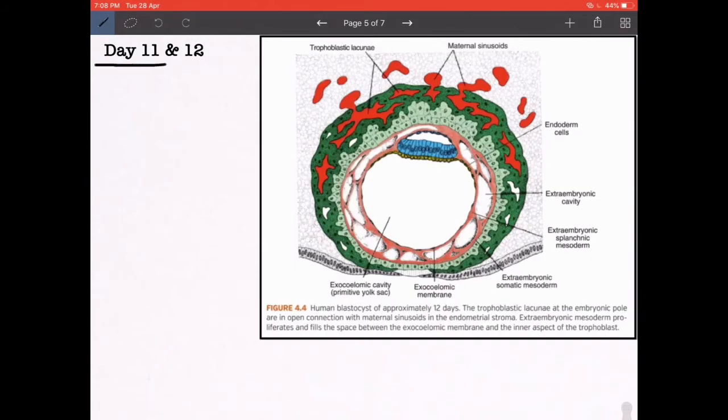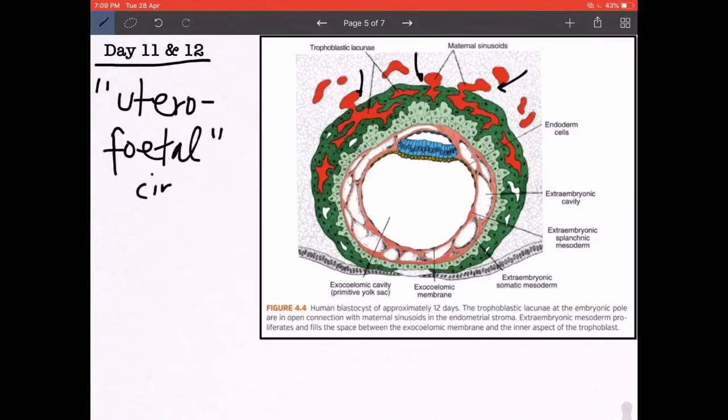Firstly, the endometrial sinusoids just made contact with the syncytotrophoblastic lacunae, and thus we have the first introduction of what is known as utero-fetal circulation. You can also call this utero-placental circulation. So it begins as early as 11th to 12th day. The lacunae have now combined and become bigger trophoblastic lacunae, and the maternal sinusoids with the maternal blood is now mixing into these, thus forming a very basic utero-placental circulation.